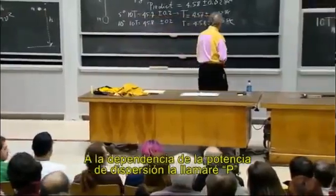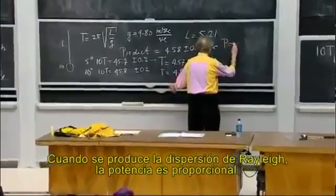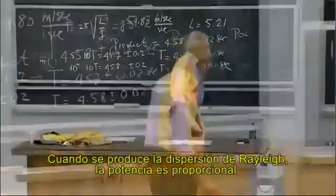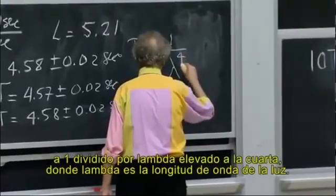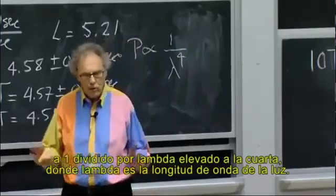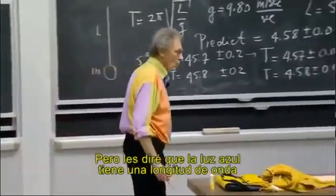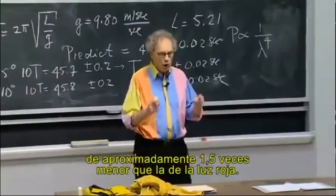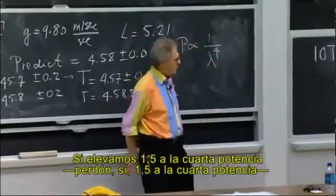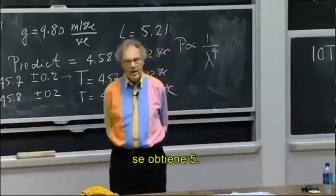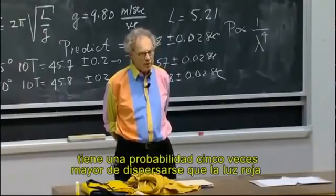The dependence of the power of scattering — I'll call that P — is proportional, when we have Rayleigh scattering, to one over lambda to the fourth. Lambda is the wavelength of light. Blue light has a wavelength which is about 1.5 times lower than red light. If you take 1.5 to the power of four, you get five. And that means in Rayleigh scattering, blue light has a five times higher probability to scatter than red light.